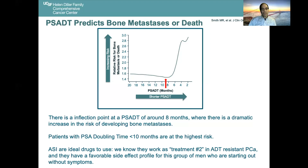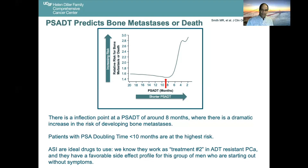The ASI drugs are ideal drugs to use here. We know they work as treatment number two in ADT-resistant prostate cancer. They also have a very favorable side effect profile, which is really important because this is a group of men who are starting out with no symptoms. It would not be great to have therapy that makes men who feel fine feel terrible, even if it was of benefit.